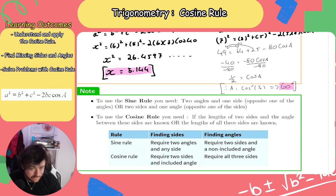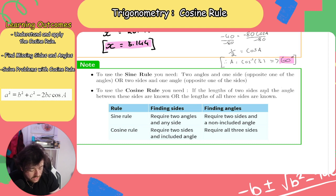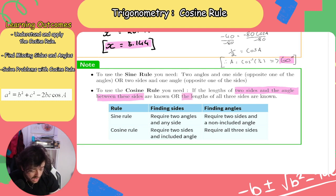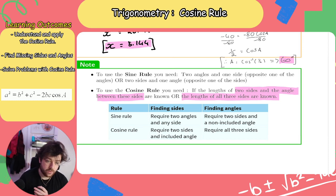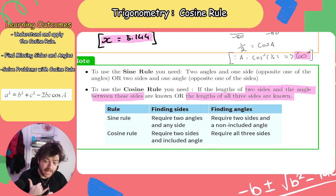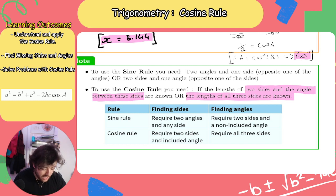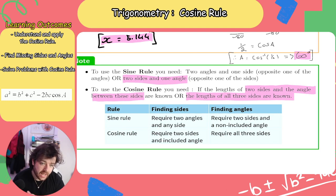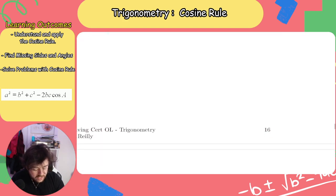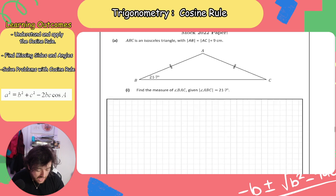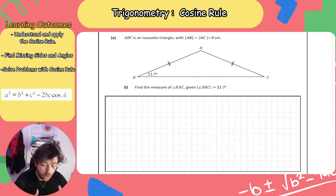Just to remember — a little tip and trick. To use the cosine rule, you need the lengths of two sides and the angle between them to be known, or the lengths of all three sides to be known. If I have two sides and the angle that's trapped between them, I can use the cosine rule. And if I have all three side lengths, I can use the cosine rule as well. As opposed to the sine rule, where I need two angles and one side — given that the side is opposite one of the angles — or two sides and one angle where the angle is opposite one of the sides given.